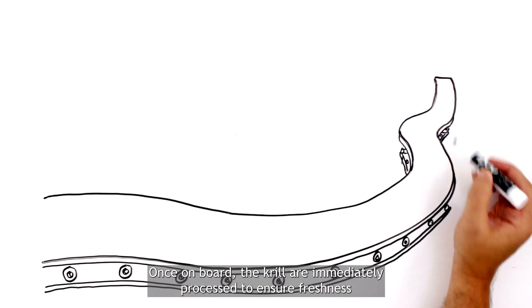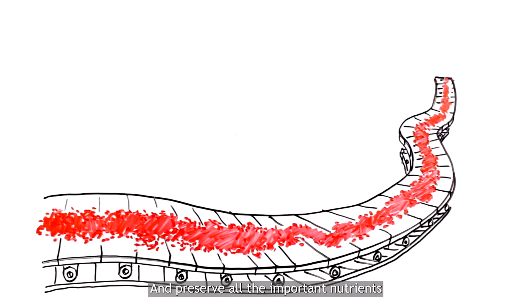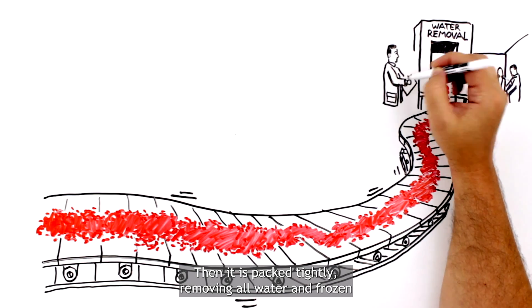Once on board, the krill are immediately processed to ensure freshness and preserve all the important nutrients. Then it is packed tightly, removing all water and frozen.